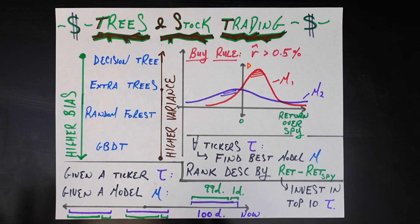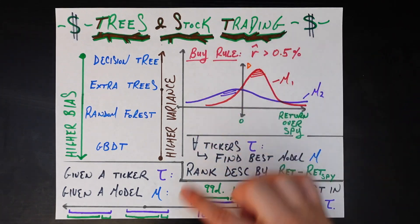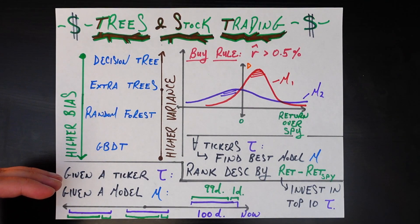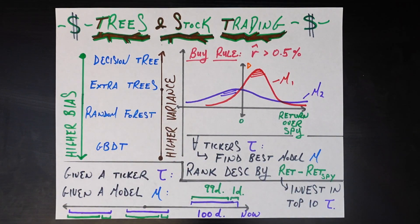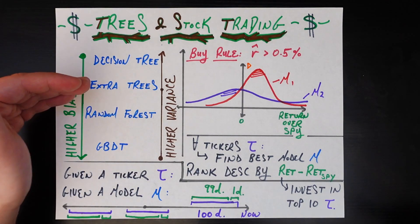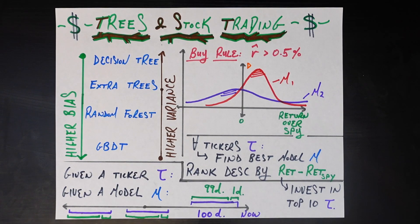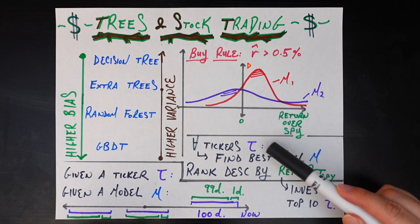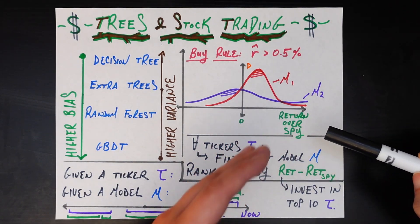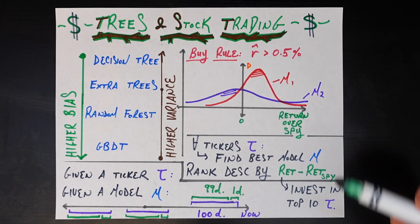Even though this seems complicated, in a nutshell we're saying: how does a decision tree do if we use it to predict next-day return and use this rule to decide whether to buy? To find out, I run every single ticker in the S&P 500. For every ticker, I train a bunch of decision trees at different points in time over the last year, use those trained models to predict next-day return, and use that prediction to decide whether to buy. I do this for every model: decision trees, extra trees, random forest, GBDT, and linear regression.